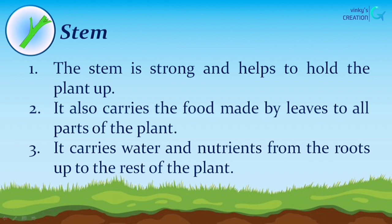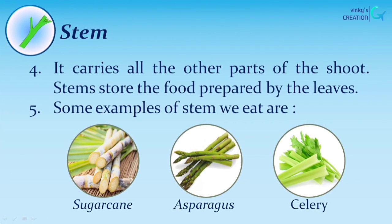Stem. The stem is strong and helps to hold the plant up. It carries the food made by leaves to all parts of the plant, and carries water and nutrients from the roots up to the rest of the plant. It also carries all the other parts of the shoot. Stems store the food prepared by the leaves. Some examples of stems we eat are sugarcane, asparagus, and celery.